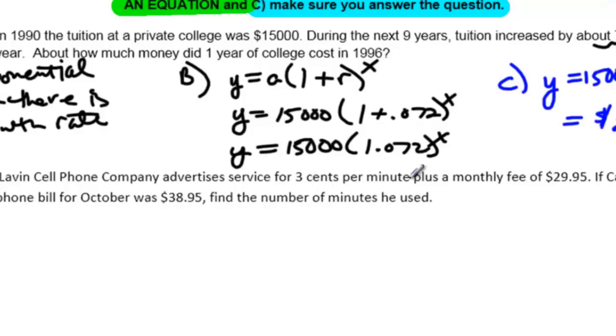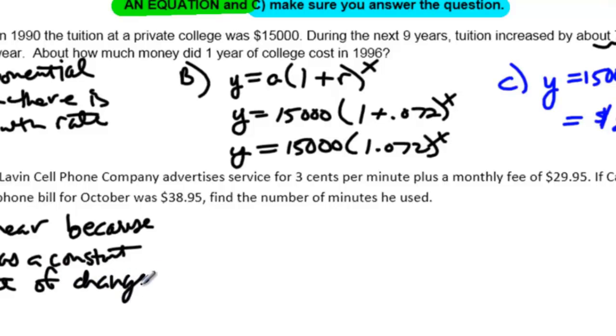When I read this, I read 3 cents per minute, and I read that as a constant rate of change. Remember our definition of linear equations is that they have a constant rate of change. So we would say that this is linear because it has a constant rate of change. I understand it's constant because for one minute that's 3 cents, two minutes it goes up to 6, three minutes it goes up to 9. It keeps going up 3 each time. That's a constant difference of 3 every time.